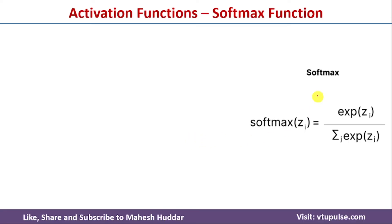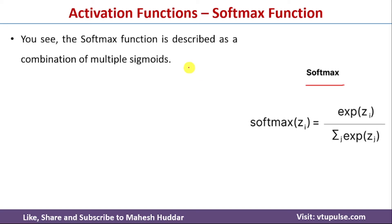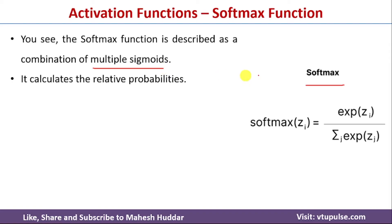The solution in this case is to use the softmax activation function. Softmax is not something entirely different — it is a combination of multiple sigmoid activation functions. It calculates the relative probabilities of each of those sigmoid functions in the neural network. The mathematical representation of the softmax activation function looks like this.